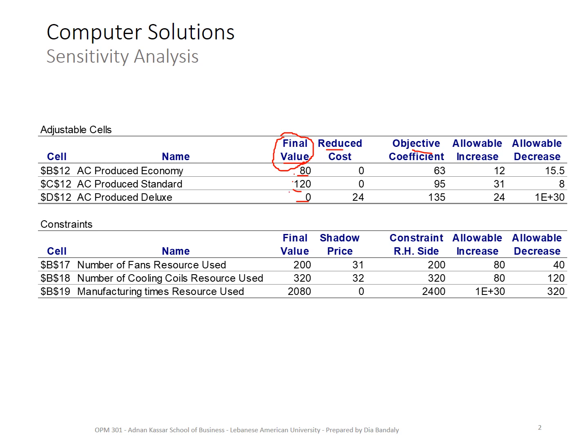So now let's see what's a reduced cost. Before that, I just missed one thing. Our sensitivity report comprises two tables. The first table is about the adjustable cells, which means the decision variables. So if anything about the decision variables values or the objective coefficient, this is where you look. This table, the other table is about the constraints. So if you have any change in the constraint, this is where you look to answer the question.